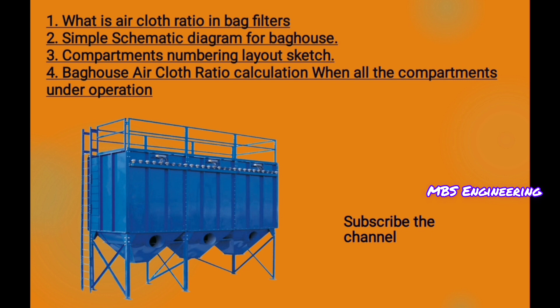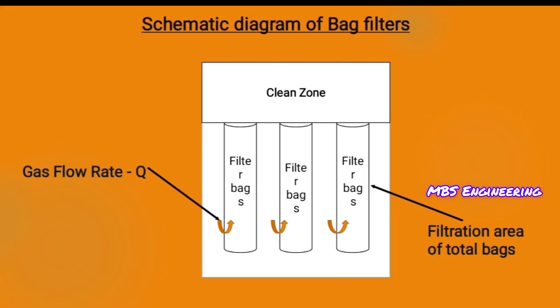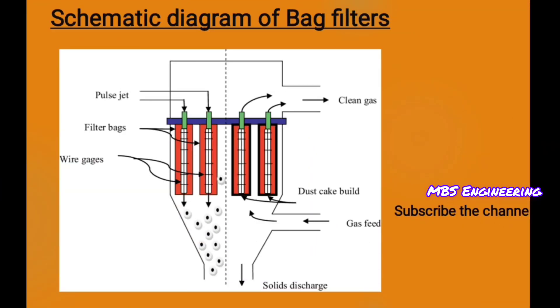First, let's understand the purpose of the bag house. The bag filter is a dust control device whose purpose is removing the dust contained in the exhaust gases from industrial processes. It is applied to various applications with different temperatures and types of gases by selecting the filter media accordingly. The bag filter separates dust from the exhaust gas by collecting it with the filter media, and the dust is accumulated on the surface of the filter media.